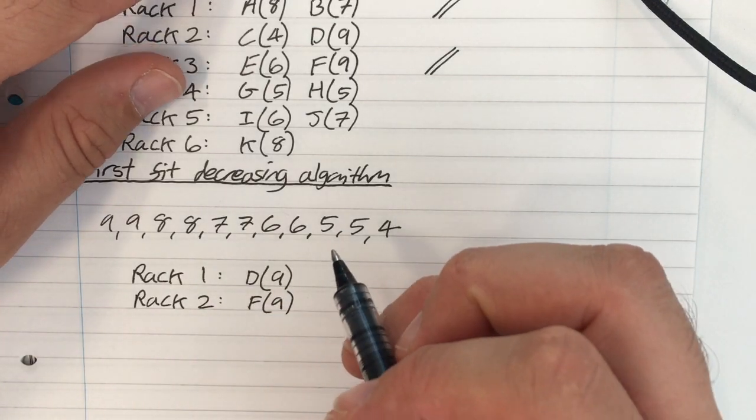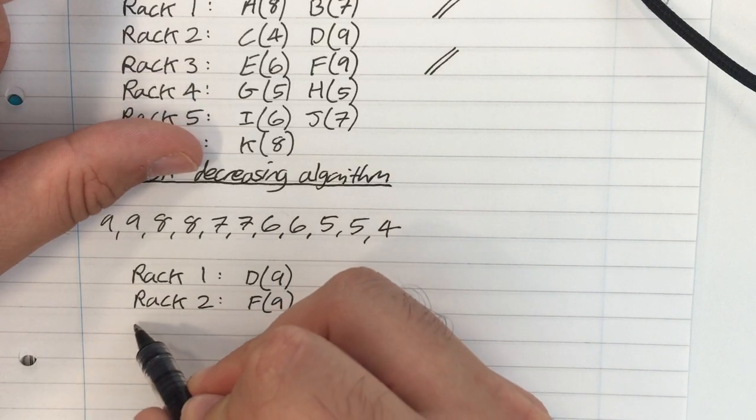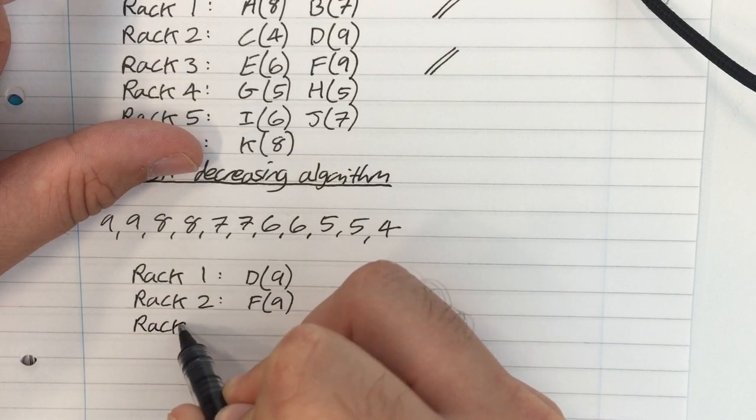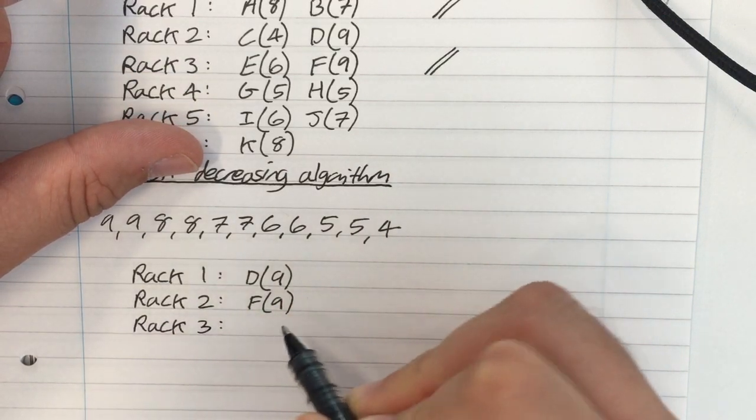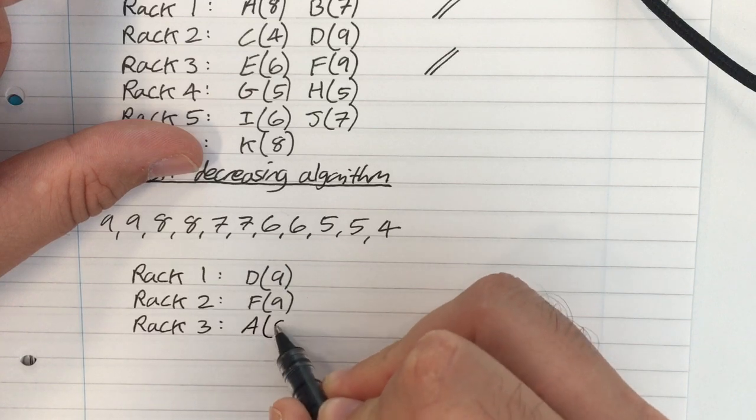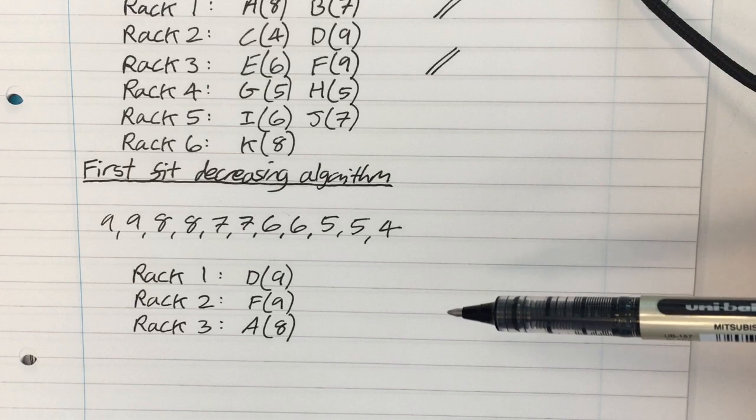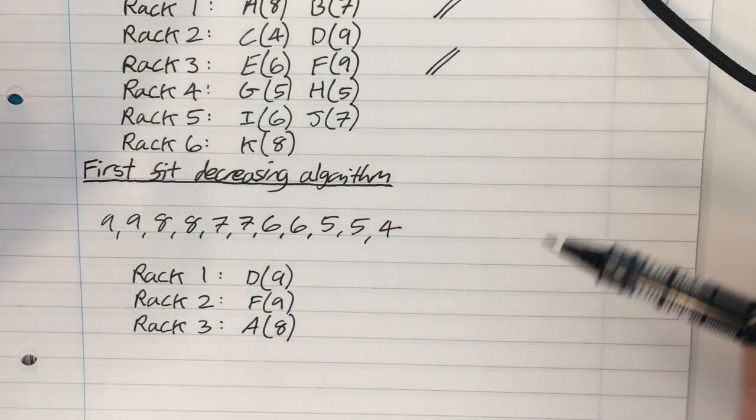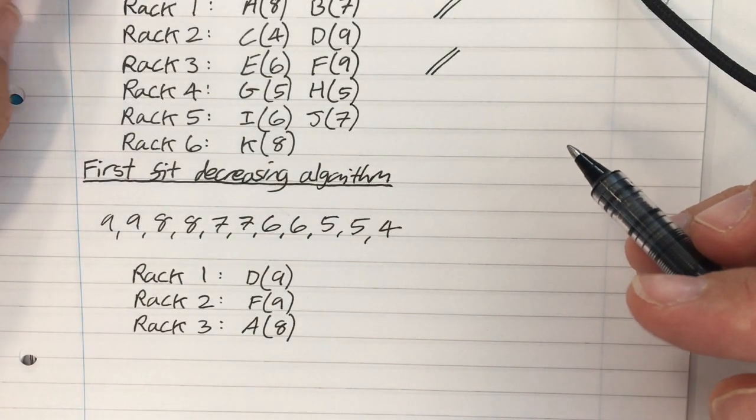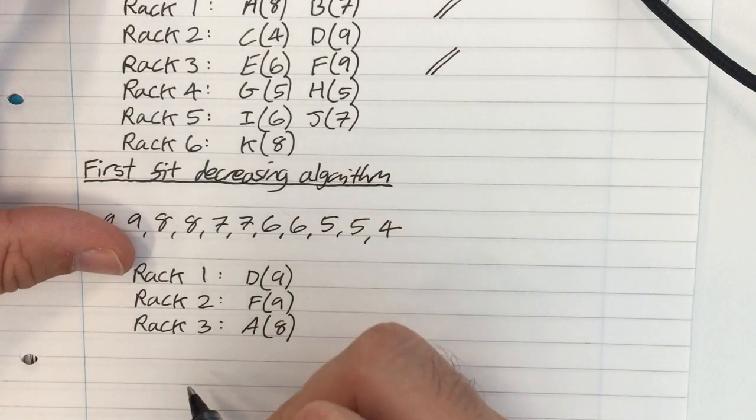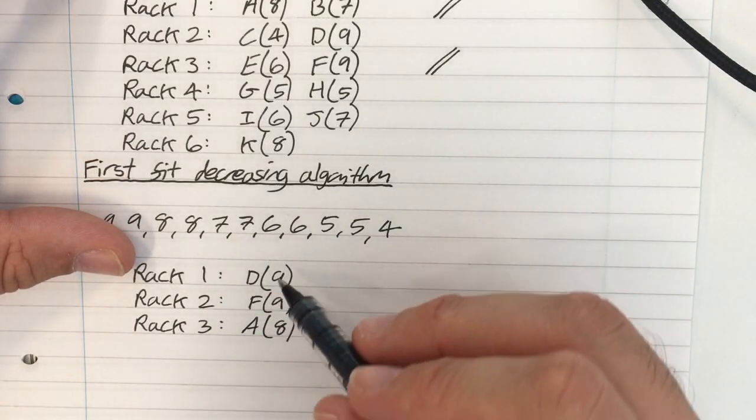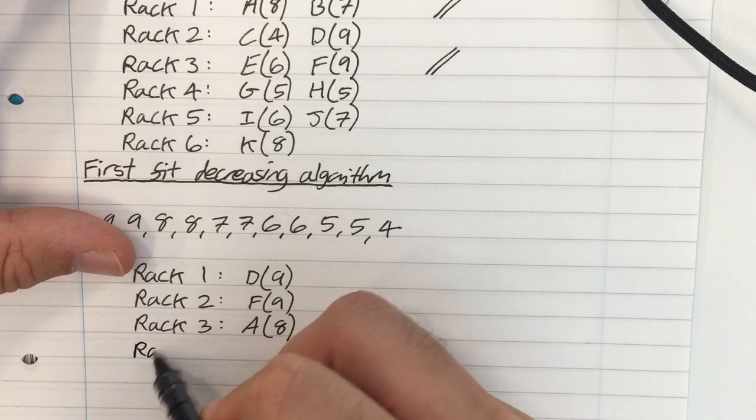Pick up the next biggest box, which is A, with 8. It's not going to fit in rack 1 or 2, so I've got to put it in rack 3. And it looks like it's not as good as the first fit algorithm, but that's because I'm doing all the big boxes first. Pick up the next biggest, which is K, which is 8. That's not going to fit in either of those three, so I've got to put it in rack 4.